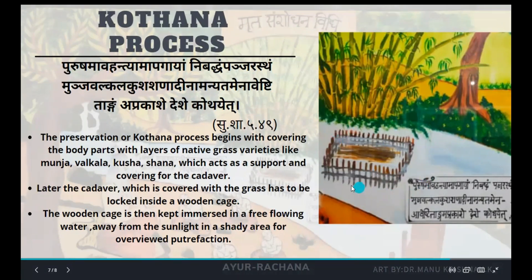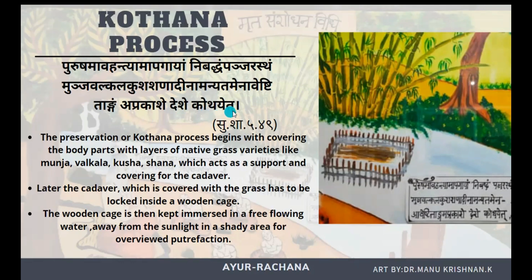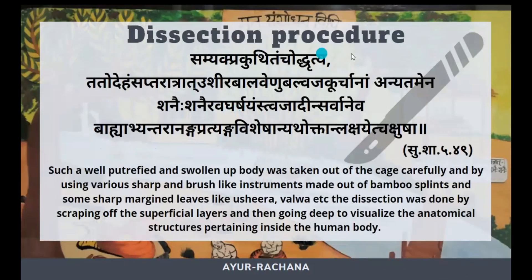A diagrammatic representation shows the body tied up with Munjavalkala Kushasanadhi grasses inside the wooden cage. The process of kodhana — controlled decomposition — should happen in a place with enough shade, away from direct sunlight. Direct sunlight would cause fast putrefaction of the body, so this method is followed to prevent that. This completes the kodhana process.